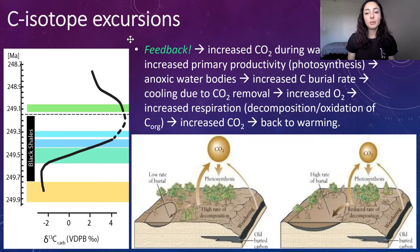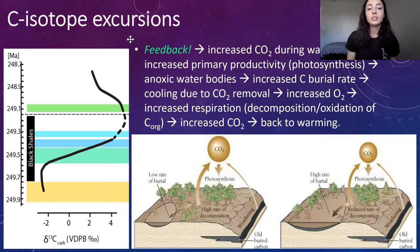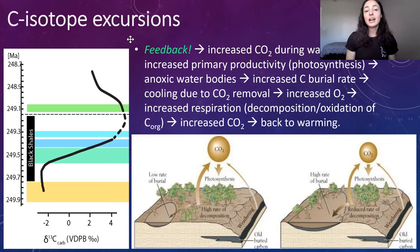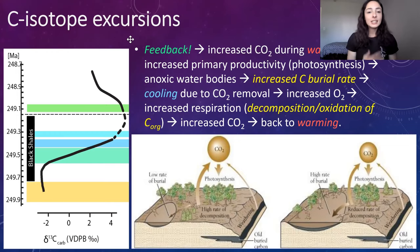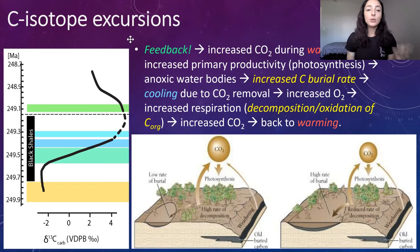A lack of oxygen — anoxic conditions — allows carbon to be buried without becoming re-oxidized first. This increased carbon burial rate causes a sink of carbon and a source of oxygen, so cooling due to carbon dioxide removal, and increased oxygen, which might then cause increased respiration and therefore increased decomposition and oxidation of organic material, increasing carbon dioxide once more and causing a return to the warming trend. So warming causes something that then causes cooling, and cooling causes something that then causes warming again.